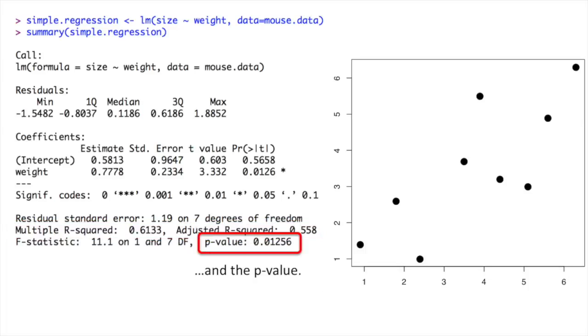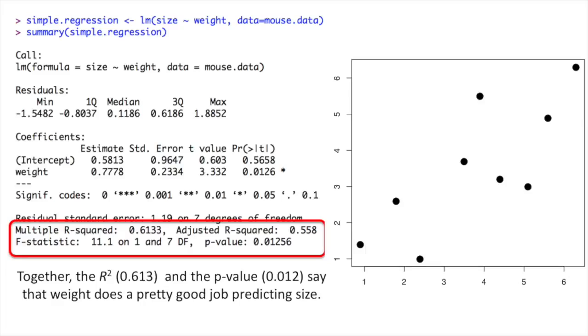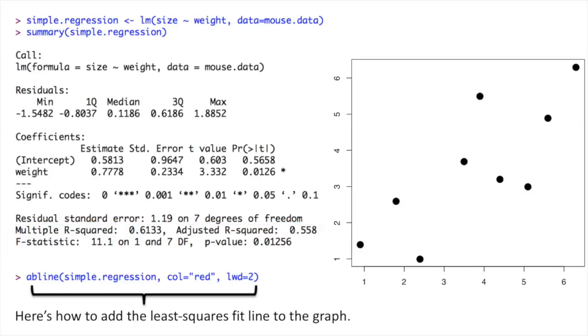There's also the P-value down here. Together, the R-squared, which equals 0.613, and the P-value, which equals 0.012, say that weight does a pretty good job predicting size. The last thing we want to do for our simple regression is add a line that shows the least squares fit on the graph. We do this using the AB line function.